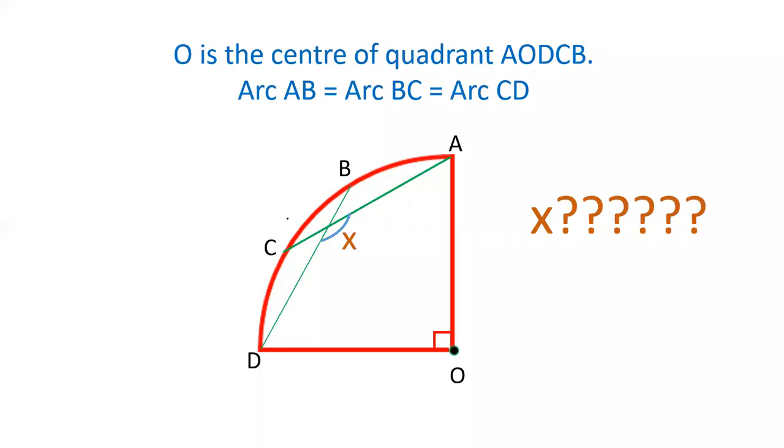Hello friends! Welcome to our YouTube channel, SSSElector. In today's video, we are going to discuss a question where there is a quadrant of the circle AODCB. The points B and C are given such that the length of arc AB equals the length of arc BC equals the length of arc CD.